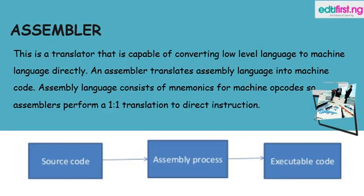We have a diagram of an assembler converting from source code to executable code. The source code passes through the assembler and then you get an executable code.